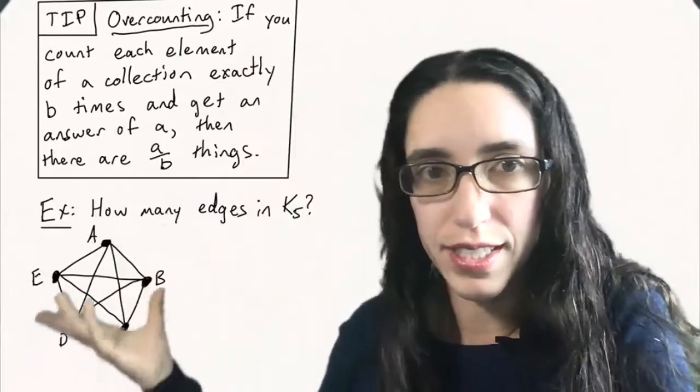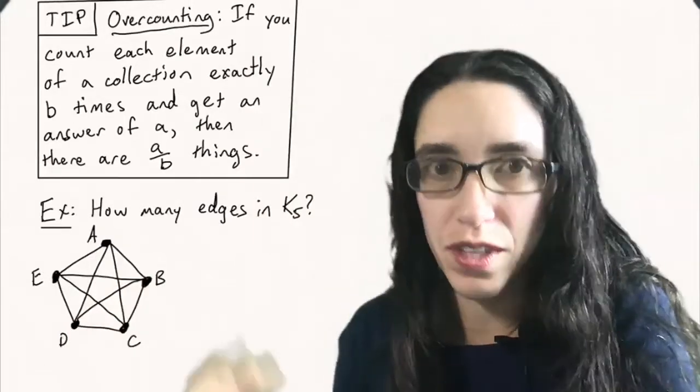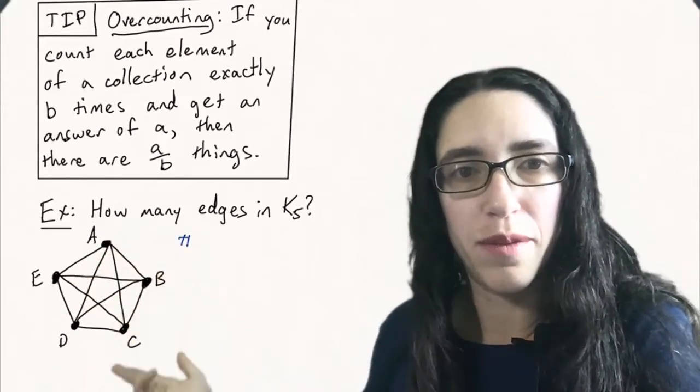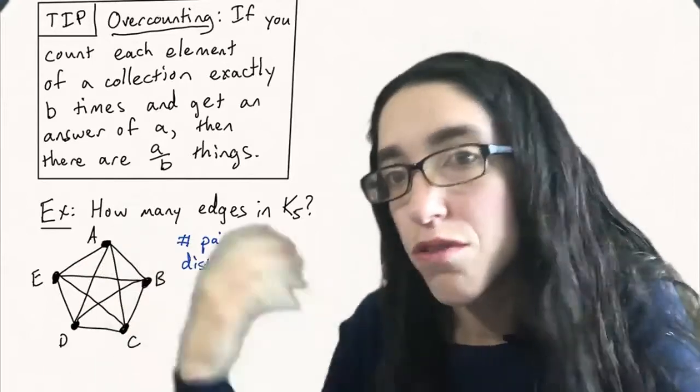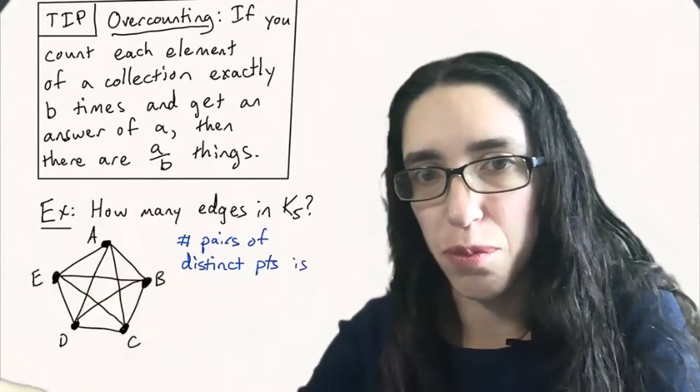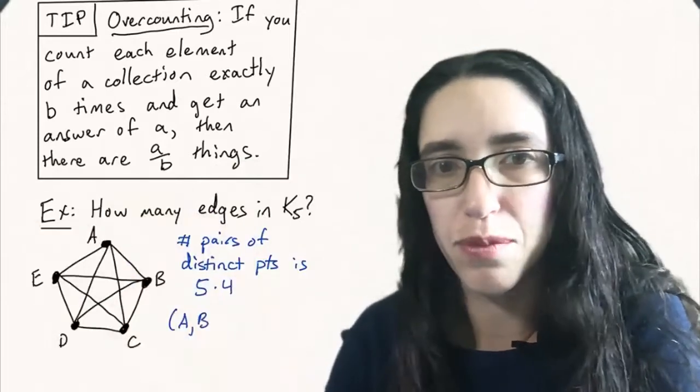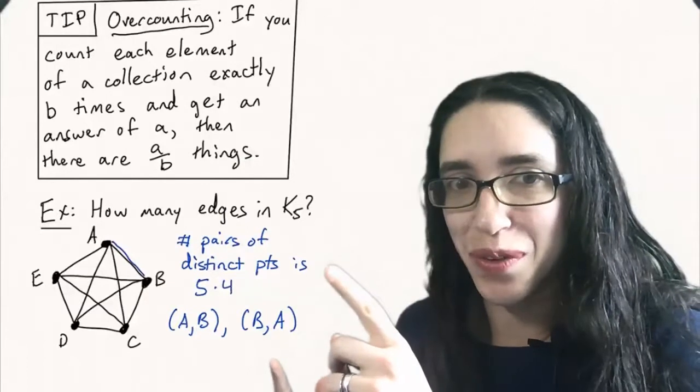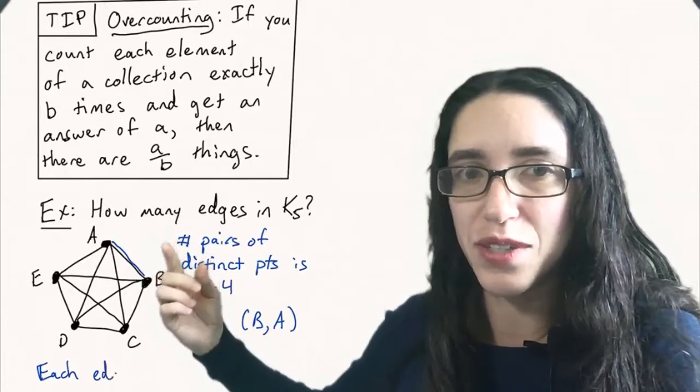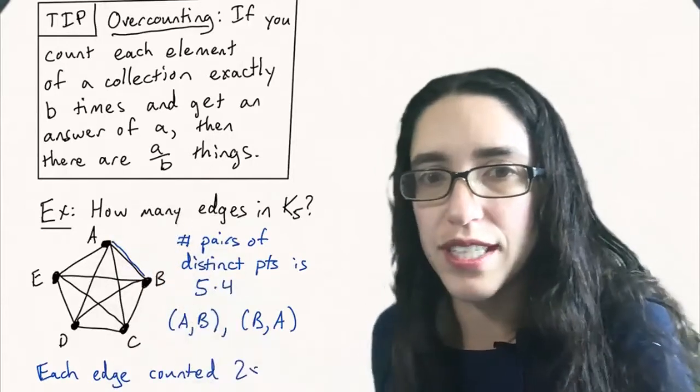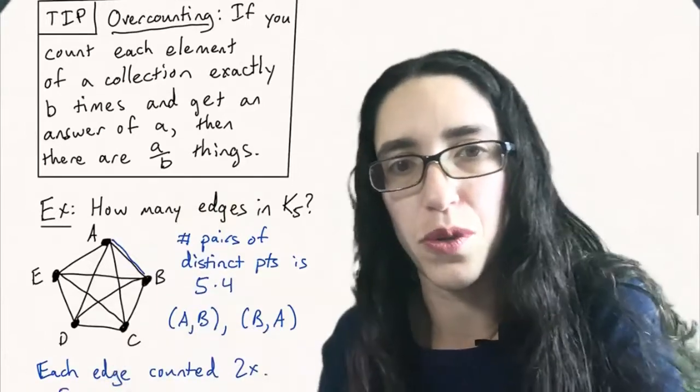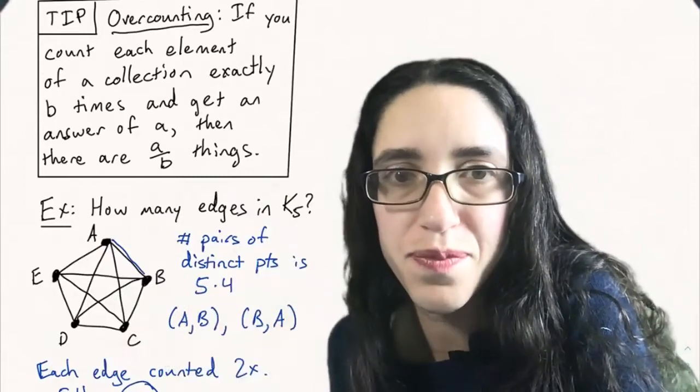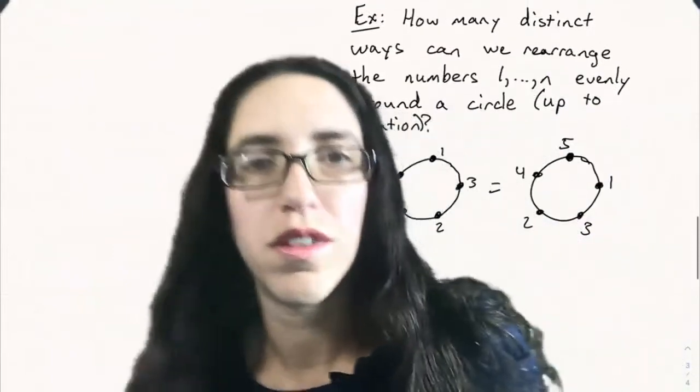Let's see an example of solving the handshake problem using this principle. For instance, how many edges are in the complete graph K5? This is how many handshakes are there between people A, B, C, D, and E if they all shake hands with each other. Let's overcount first by saying a handshake consists of one person and then another person. To pick one person and then a different person that they shake hands with, the number of pairs of distinct points is five times four. This includes pairs like A comma B and also B comma A, but we don't want to count that twice. Each edge in this count is counted twice, so we overcounted by a factor of two. Instead of five times four, we get five times four divided by two, which is ten, the answer we've gotten using other methods.